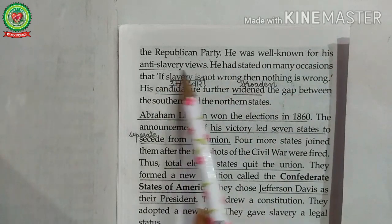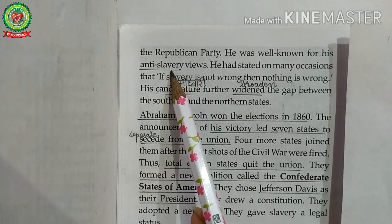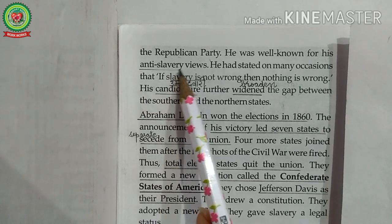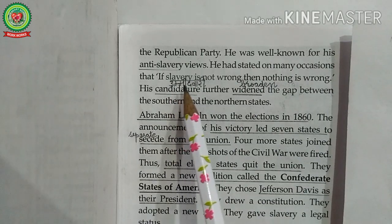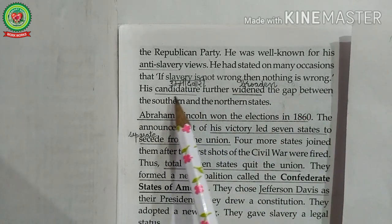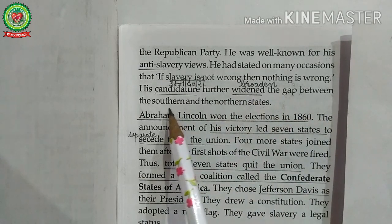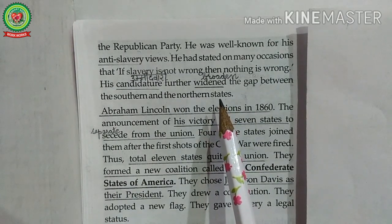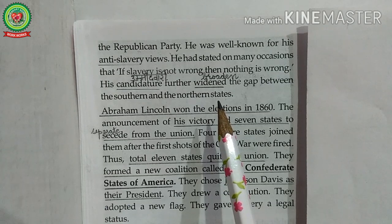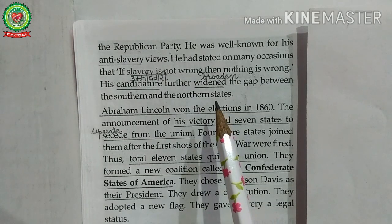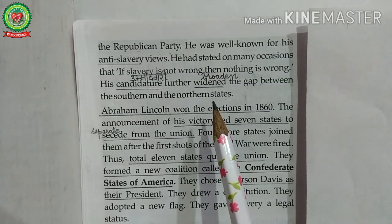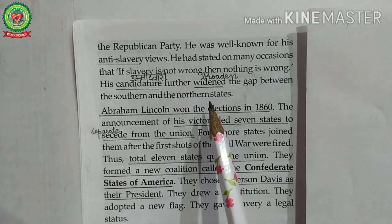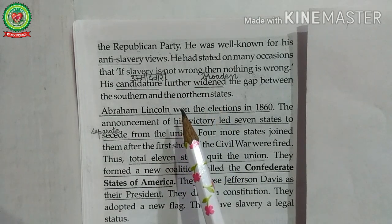Abraham Lincoln was well known for his anti-slavery views — anti-slavery means against slavery. He totally wanted to abolish slavery. He had stated on many occasions that if slavery is not wrong, then nothing is wrong. His candidature further widened the gap between the southern and the northern states. Lincoln belonged to the northern states, and he wanted all states to be completely free states. But the southern states were against this stance, so conflict increased between the northern and the southern states.